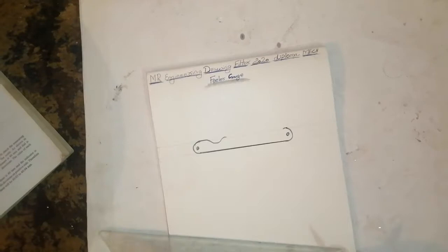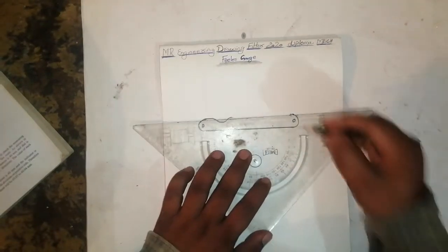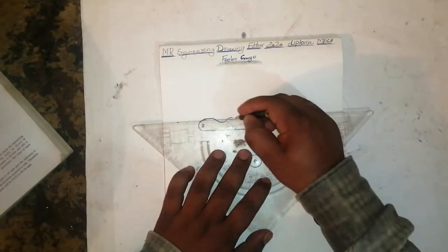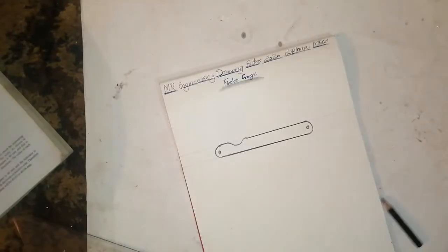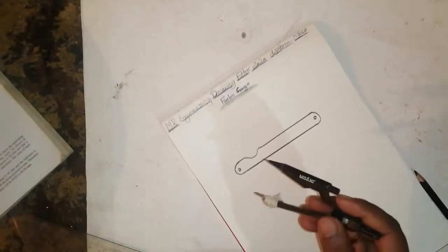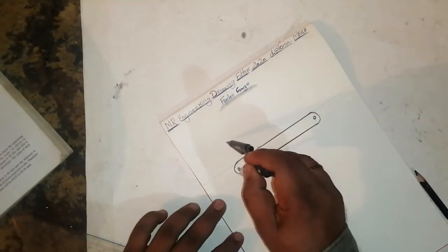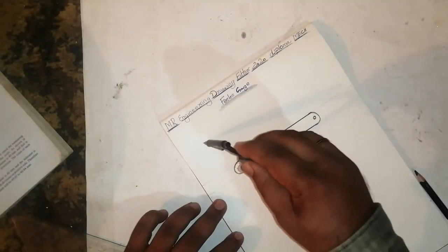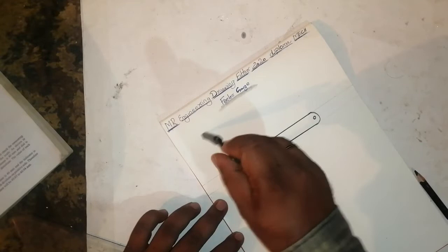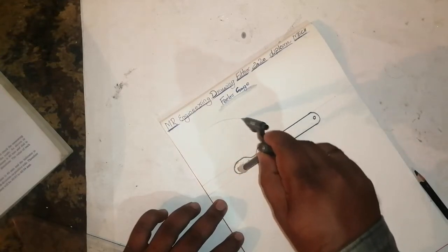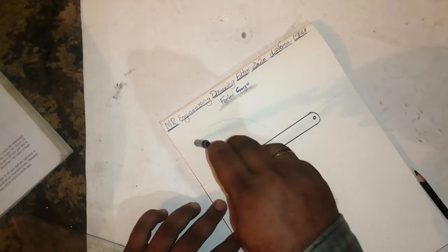Draw like this, then from this edge to this edge. Take a compass and draw a little bit of one half round circle like this.